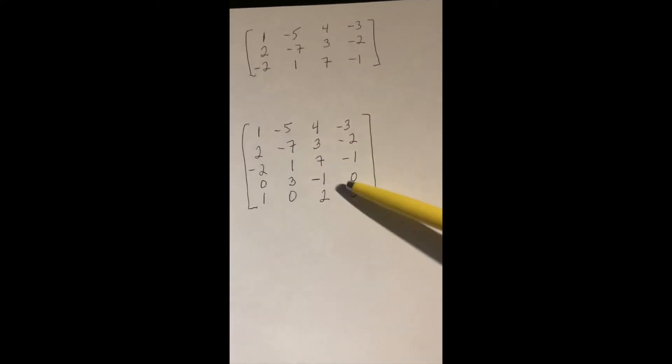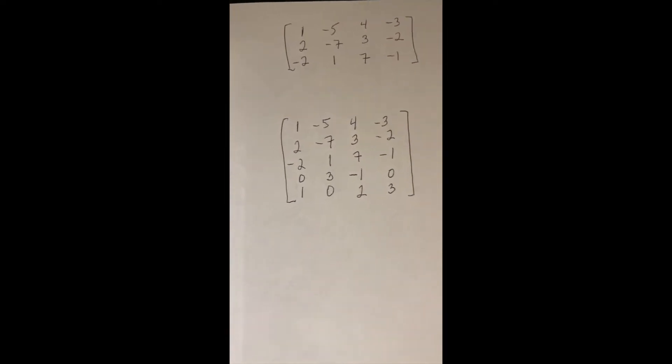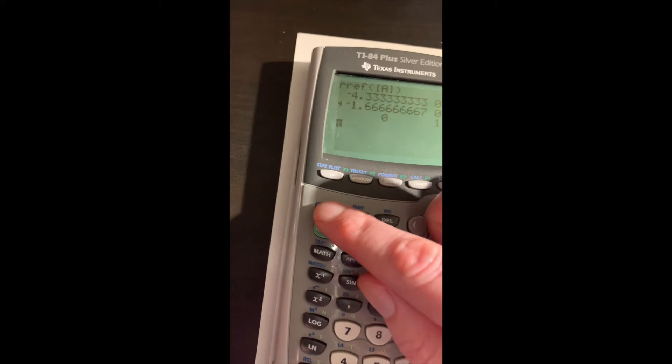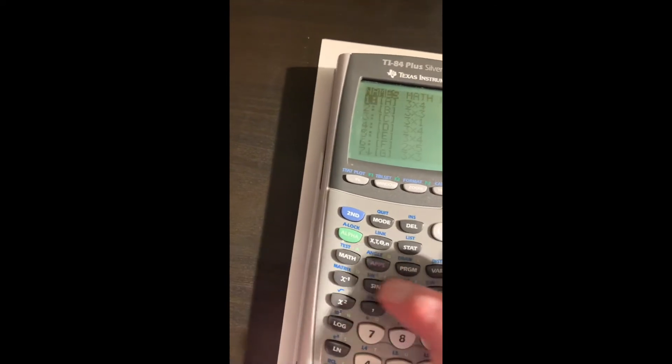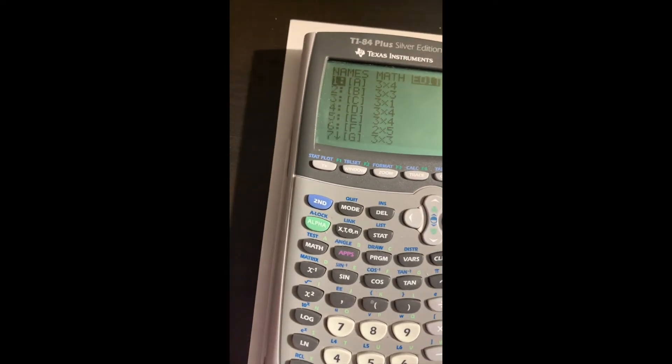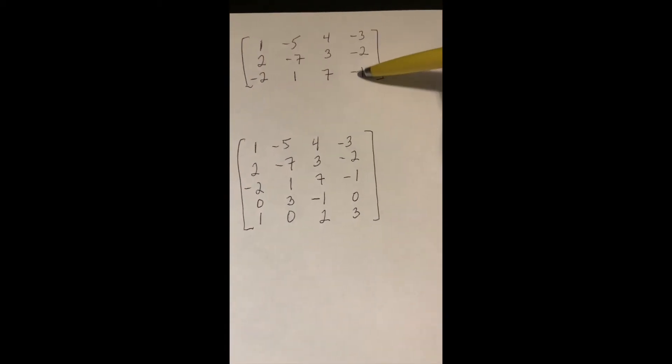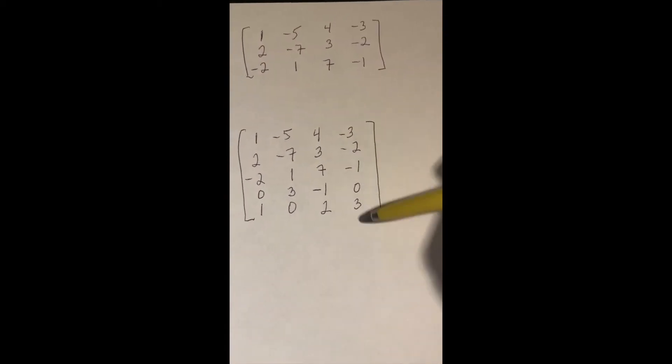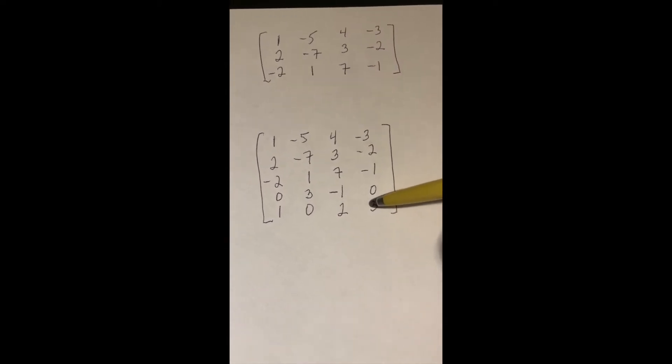The reason I'm going to do this is because the calculator has a problem with these size matrices. We'll go back to the matrix menu and edit that same matrix since the first three rows are the same. I just need to add some more rows down here.